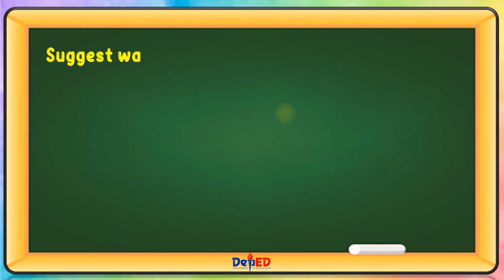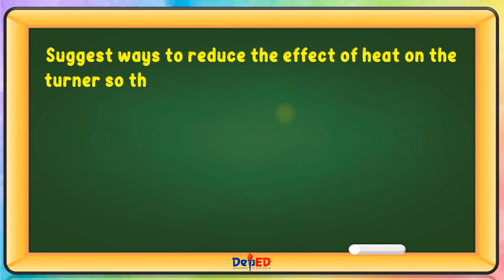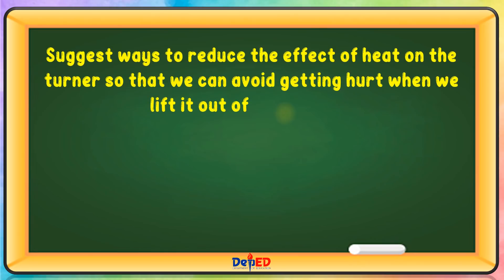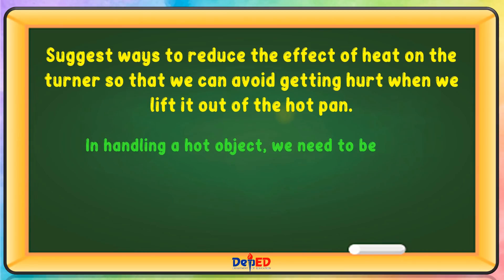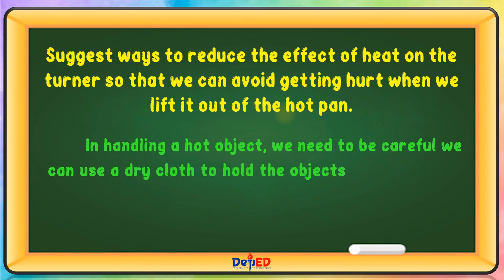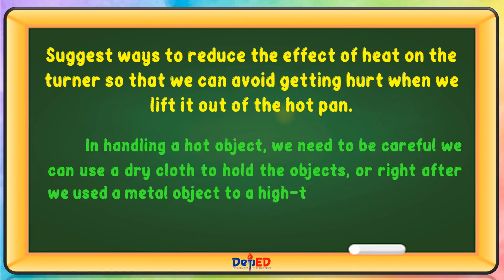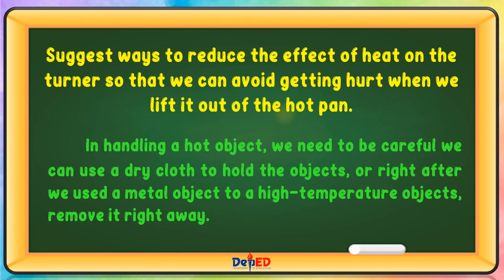Suggest ways to reduce the effect of heat on a turner so we can avoid getting hurt when lifting it out of a hot pan. In handling a hot object, we need to be careful. We can use a dry cloth to hold the object, or remove the metal object from a high-temperature source right away after use.